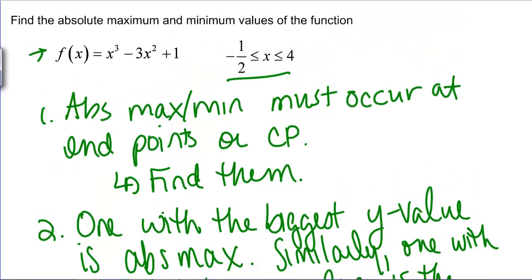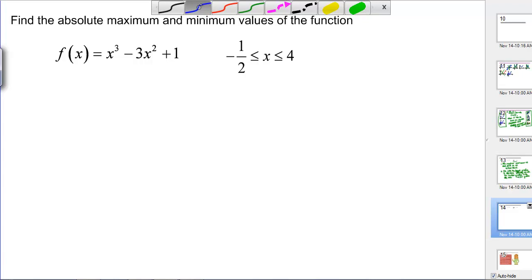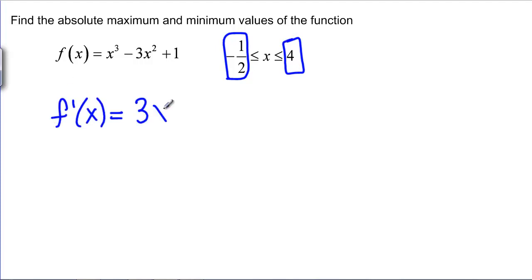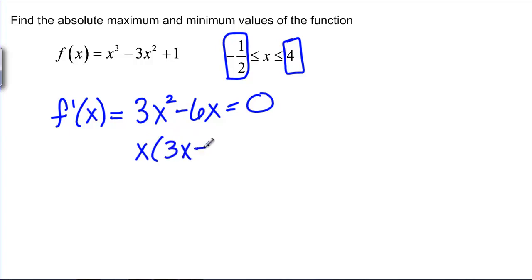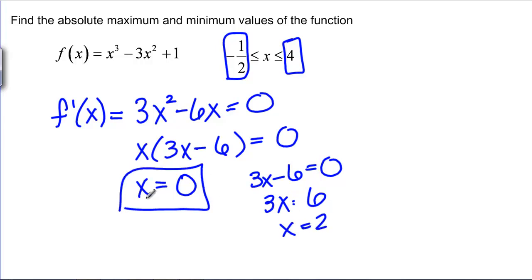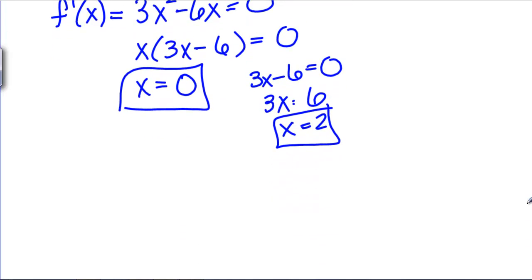Let's try this for a given example. We need to find the critical points and the endpoints. The endpoints are easy — they're given to us. The critical points are where the derivative is zero or undefined, so we find the derivative, which is 3x² − 6x. It's a polynomial so it's never undefined. Setting it equal to zero and factoring out an x gives us x(3x − 6) = 0. This means x = 0 and x = 2 are critical points. We have two critical points at x = 0 and x = 2, and two endpoints at x = −1/2 and x = 4.